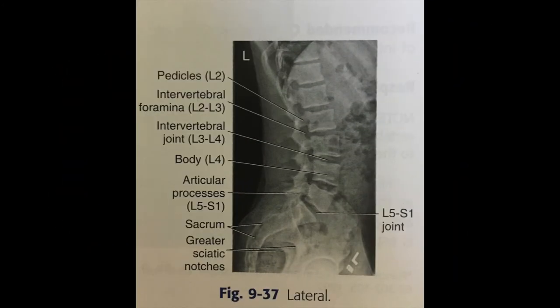Anatomy demonstrated includes intervertebral foramina L1-L4, vertebral bodies, intervertebral joints, spinous processes, and the L5-S1 junction.